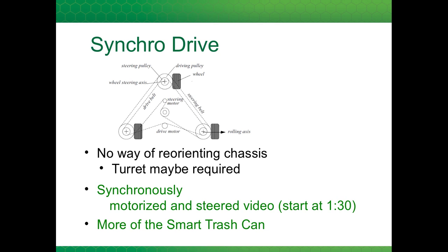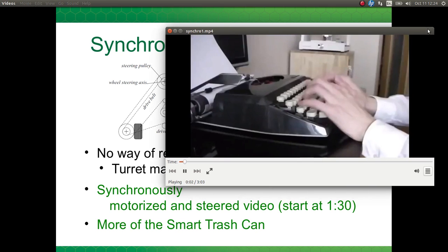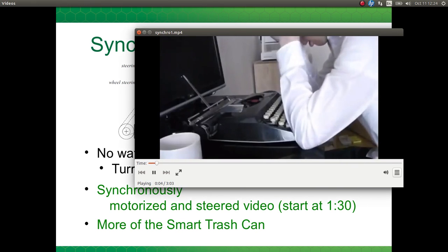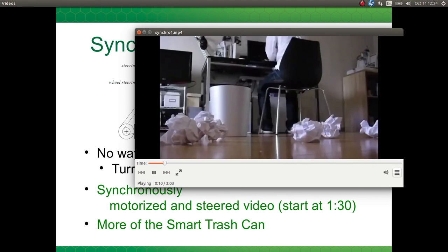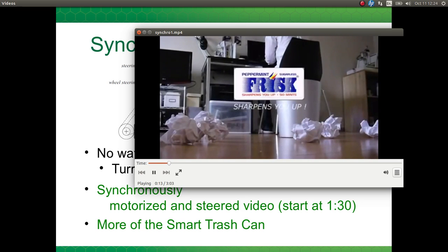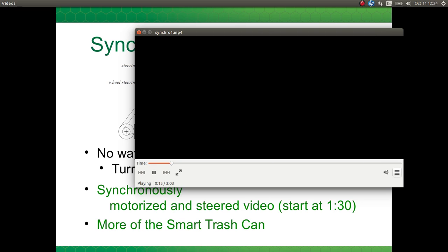Here is another robot example: the synchro drive. The synchro drive steers and maintains the same speed for every wheel. This configuration can't rotate the chassis, so if you want rotation out of the robot, you might need to add a turret — like the manipulator mounted on the KUKA robot. Here's a brief video showing an example of the synchro drive — a commercial where a guy throws paper over his shoulder and the trash can catches it. That's an application for the synchro drive.